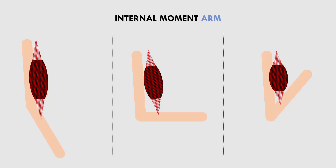As a simple exercise, if we look at our bicep curl again, we can see that we have a longer internal moment arm between the biceps insertion and the elbow joint at mid-range, and a shorter internal moment arm at the start and end of the lift. This means that the biceps are in a more favourable position to produce force during the mid-range, compared with the start and end of the lift.